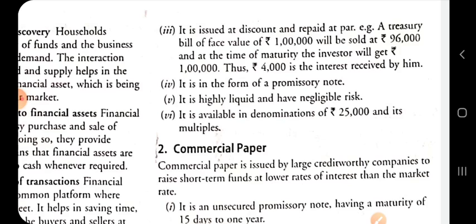Treasury bills are available in the denomination of Rs. 25,000 and its multiples. If any investor wants to invest in the Treasury bill, they will invest amounts in the denomination of Rs. 25,000. This is the first instrument of the money market.